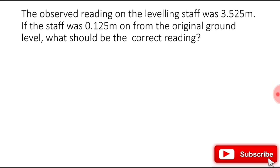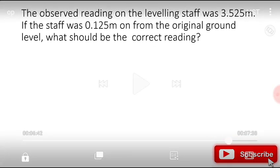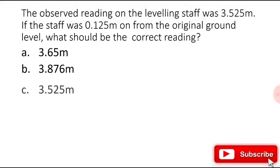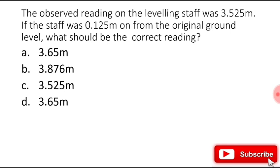The observed reading on the leveling staff was 3.525 meters. If the staff was 0.125 meters above the original ground level, what should be the correct reading? The right answer is 3.65 meters, by adding the values.